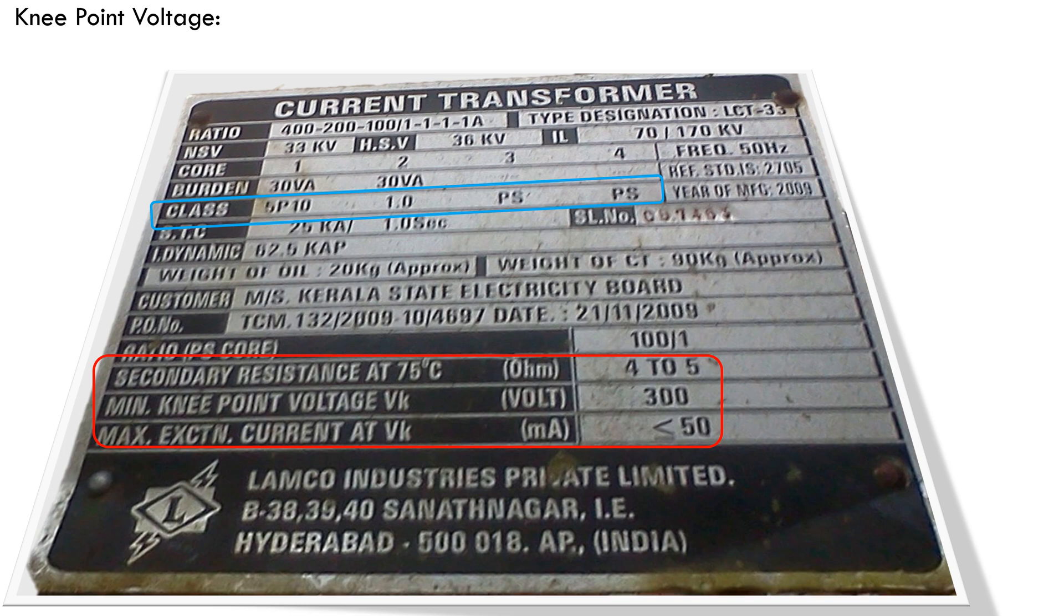Measuring core requires good accuracy up to 120%. They require low level saturation with low exciting current and knee point at low flux density. In protection cores, accuracy is not important. Require accuracy up to many times of rated current.